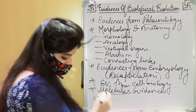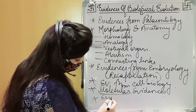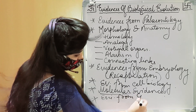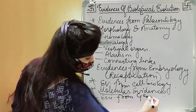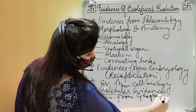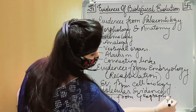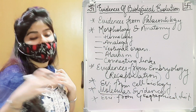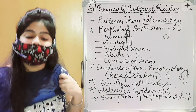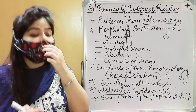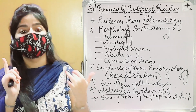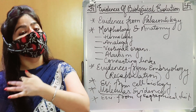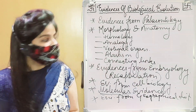The last topic is evidences from geographical distribution. In this last topic, we will study three things: the Galapagos Islands, then adaptive radiation, and lastly, Darwin's finches.